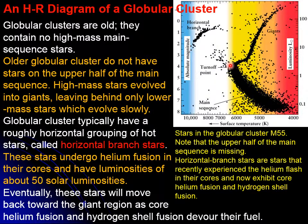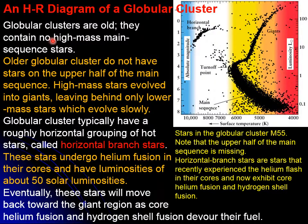This turnoff point tells you that all the stars that used to be at the top are now in the giant region. We can estimate how old the cluster is just by looking at this turnoff point. Globular clusters tend to be old and they don't have high mass main sequence stars, because those high mass stars already became red giants and moved away from the main sequence.